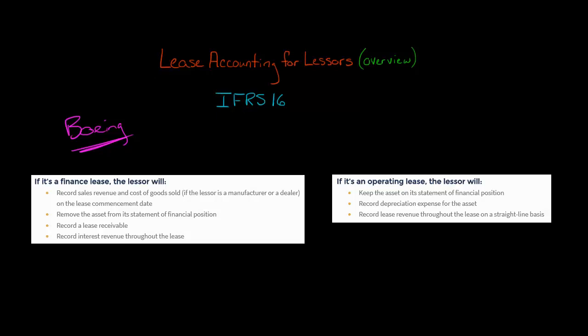You can have a situation where there's a finance lease and they're not a manufacturer or dealer, and there's no selling profit — the only profit they're going to make from the lease is interest. But let's go through the basics first. So booking a sale and COGS and having some selling profit if they're a manufacturer or a dealer.